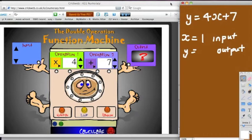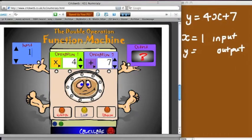So, let's see if I can type in 1 for my input, lovely, okay, and then I click calculate down here, and it should work out my new value. I think it's going to be 1 times 4 is 4, add 7, 11, fantastic.